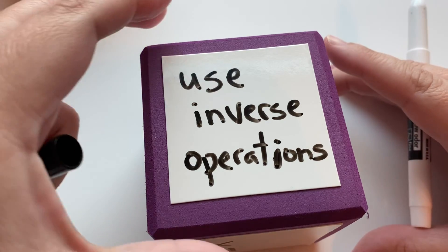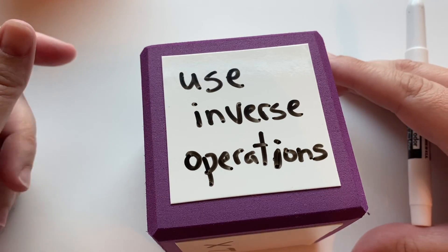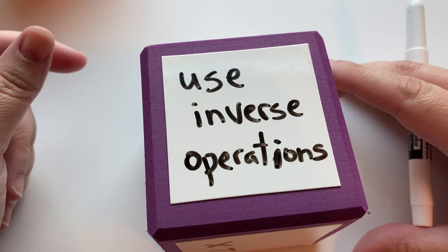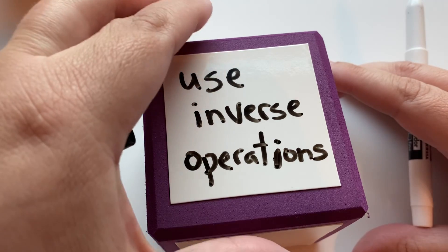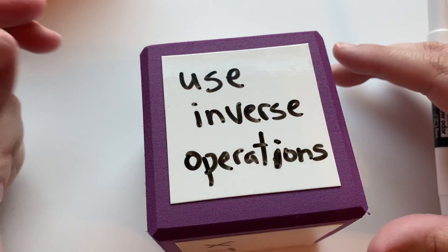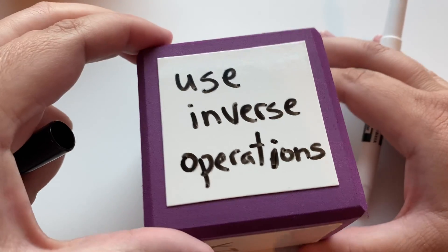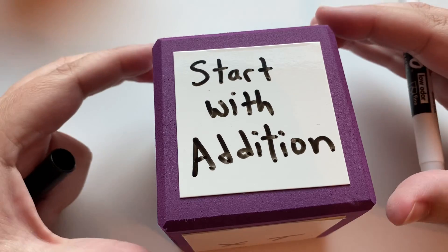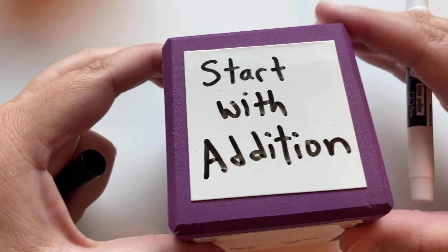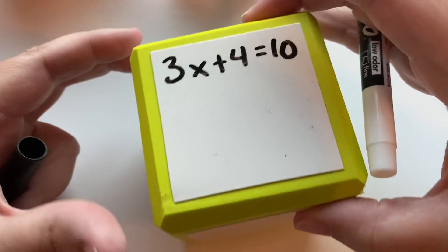But with two-step equations, you might have two different operations going on on one side of the equation, so you're going to have to do two steps. Today we're going to talk about when there's multiplication and addition, and we are going to start with addition. Let's look at an example and see what we're talking about. So here's our first example.